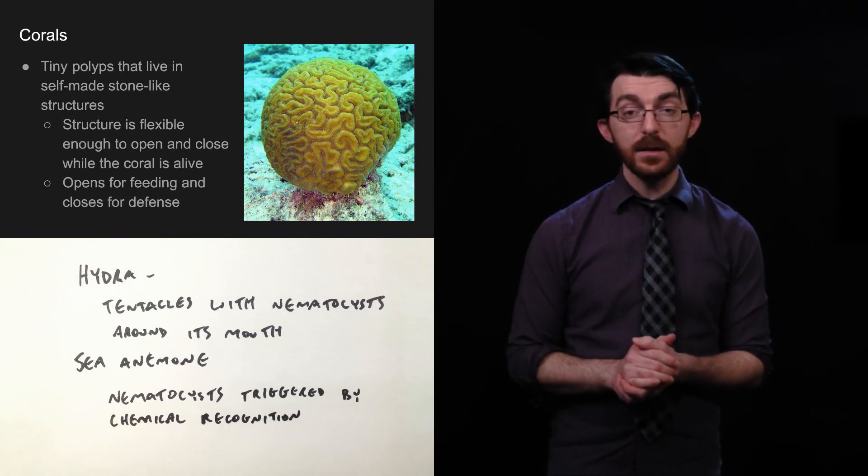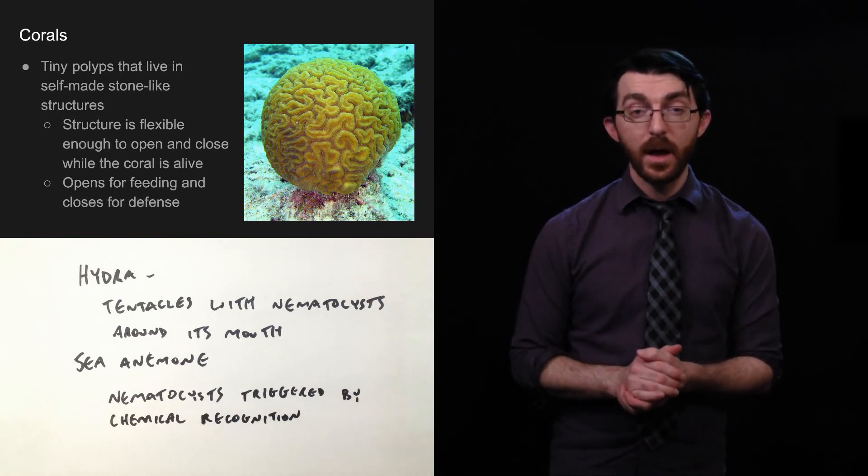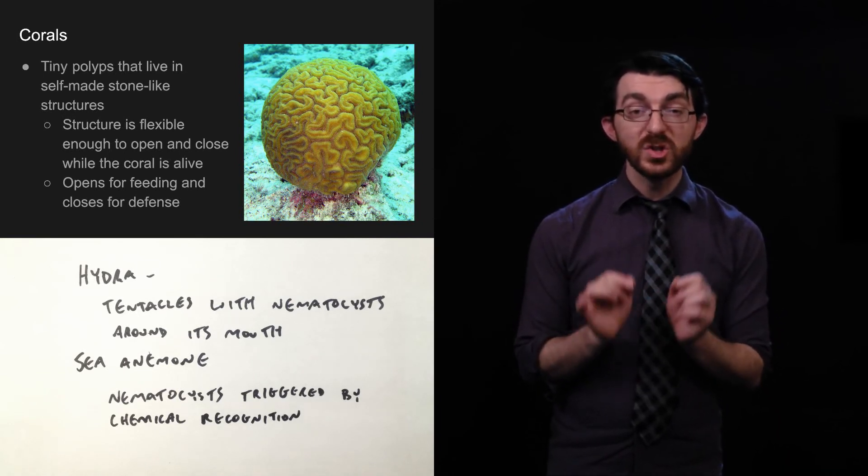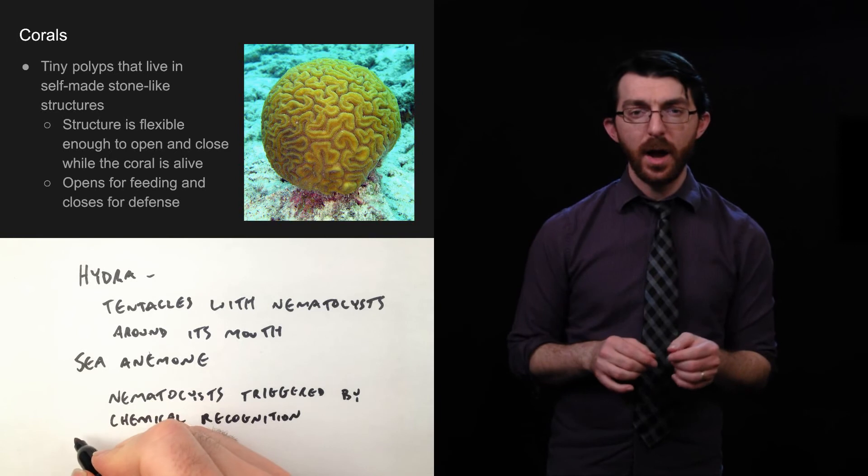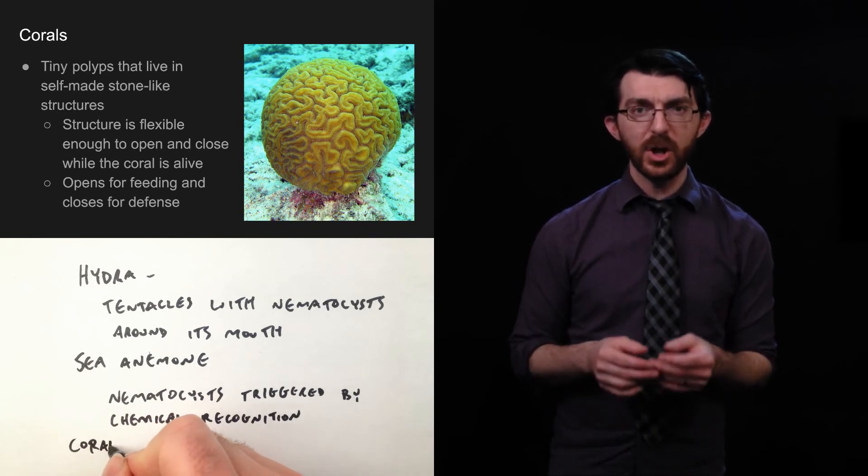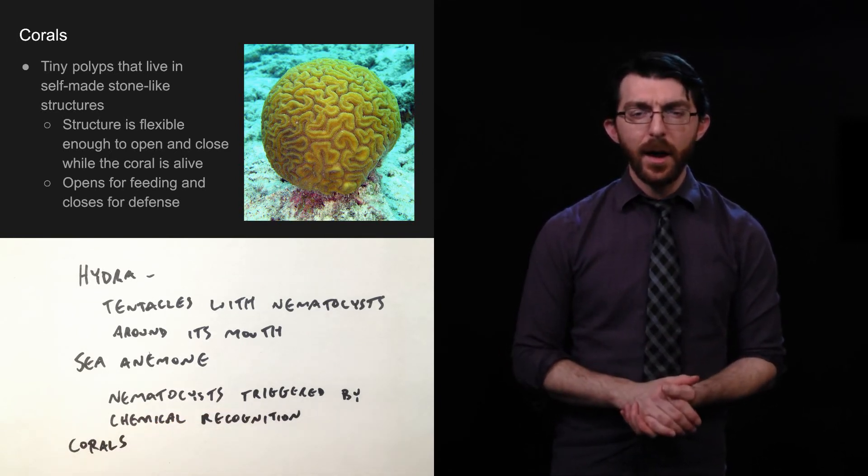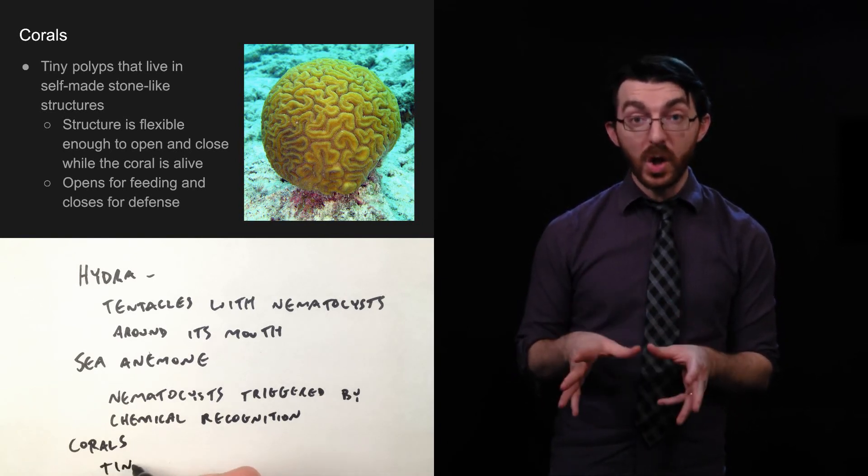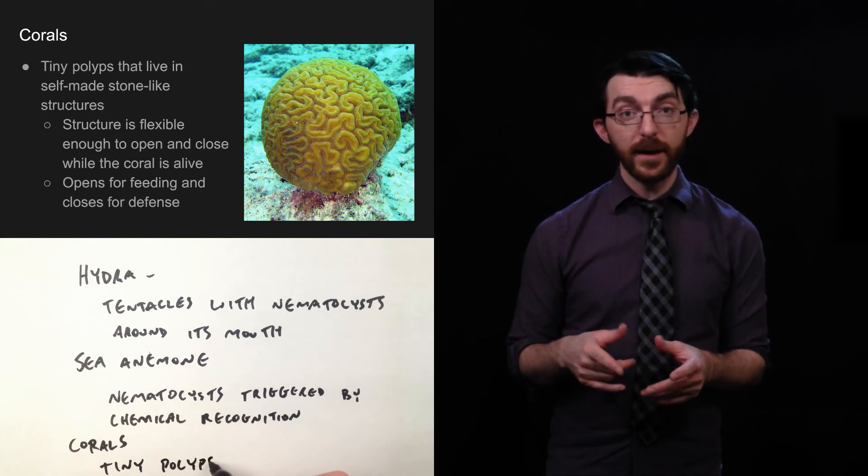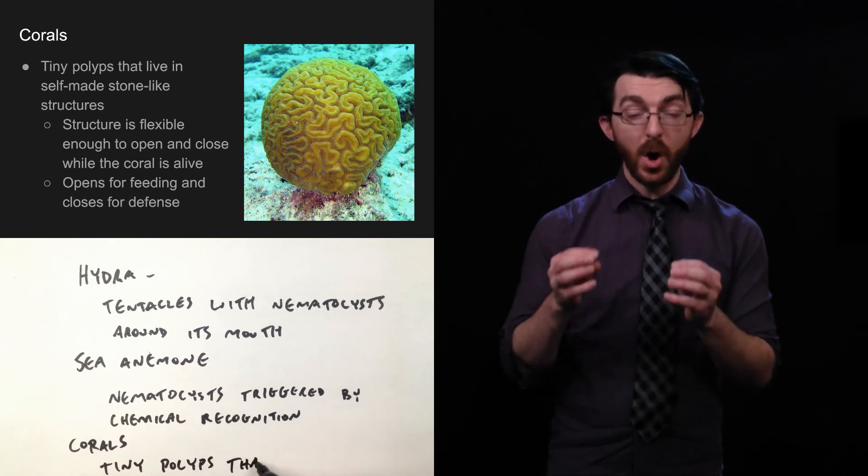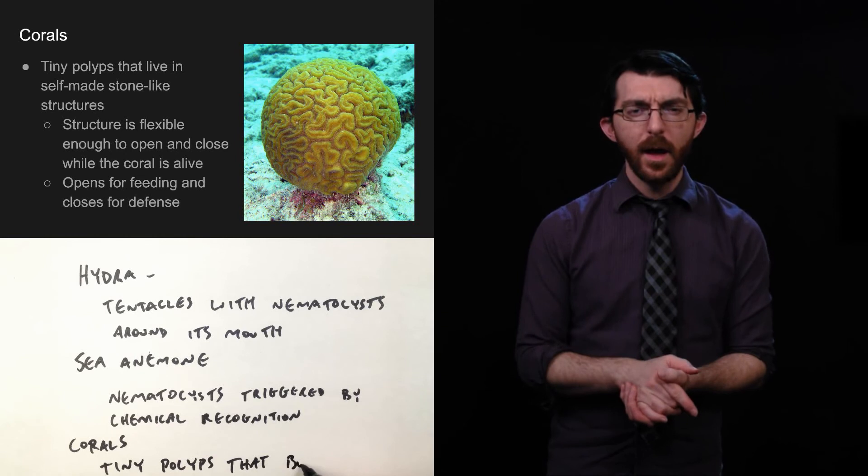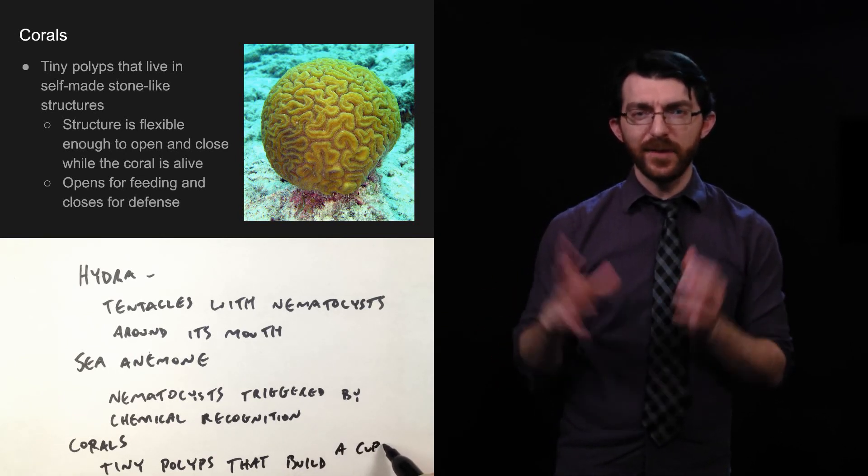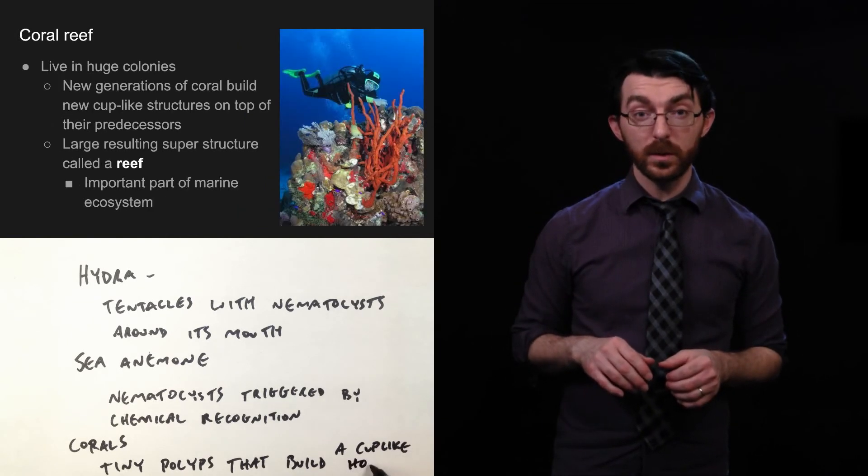Also, corals. Corals is another group of invertebrates. These are tiny polyps that live in self-made stone-like structures. These structures are called reefs. They're huge and they're very hard. They're made of minerals. The structure is flexible enough to open and close while the coral is alive. But, obviously, when the coral dies, it kind of hardens and becomes rock-like. It's also able to open for feeding and when it needs to defend itself, it can close. So, those are corals.